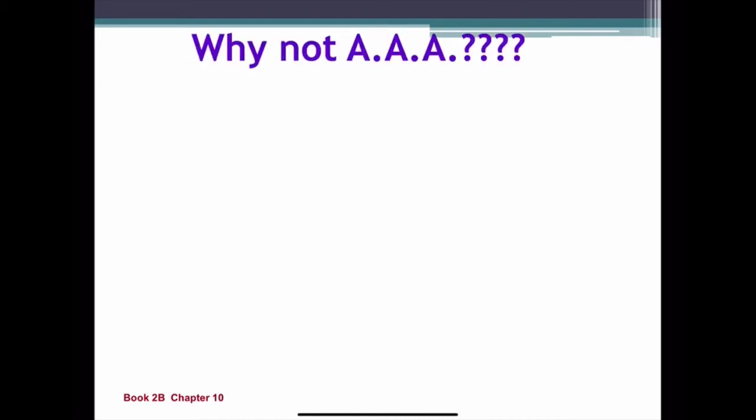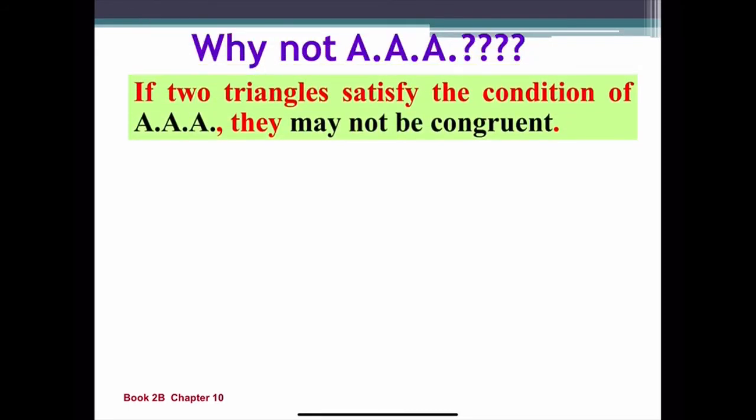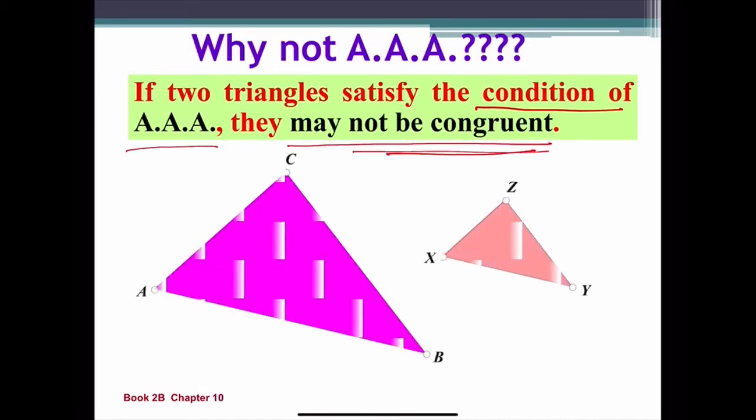I would like to explain why we can't use AAA for congruent triangle. So I'm going to give you one example in which they are in the condition of AAA. But obviously, they are not congruent. So you see, one bigger, one smaller, they are in the condition of AAA, but they are not congruent. They are not the same.